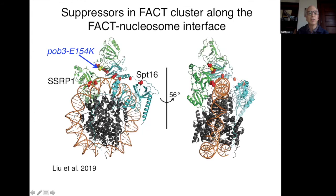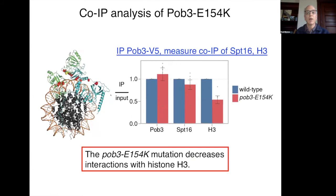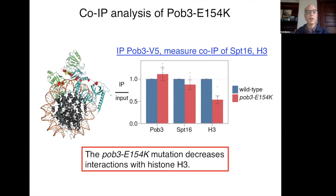We wanted to test the effect on the interaction of Pob3 and Spt16, and also of FACT with histones, by co-immunoprecipitation. Olga IP'd either wild-type or mutant Pob3, then looked at co-IP of Spt16 and histone H3. There's very little effect on co-IP of Spt16, but there's about a two-fold drop in the level of co-IP of histone H3. From this we conclude that the primary defect by this assay is decreased interaction with histone H3, not impaired FACT heterodimer formation.